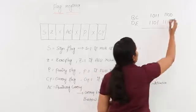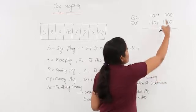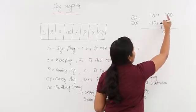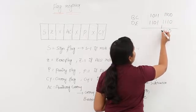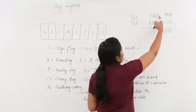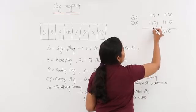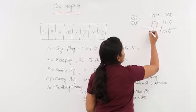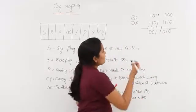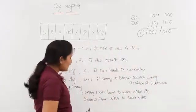Adding 1011 and 1100: 0 plus 0 is 0, 1 plus 0 is 1, 1 plus 1 is 0 with carry 1, 1 plus 1 plus carry 1 gives 1 with carry 1. Then adding 1101 and 1110: 1 plus 1 plus 1 gives 1 with carry 1, 1 plus 1 is 0 with carry 1, again 1 plus 1 is 0 with carry 1, and again three ones gives 1 with carry 1. This final carry is taken into the carry flag.